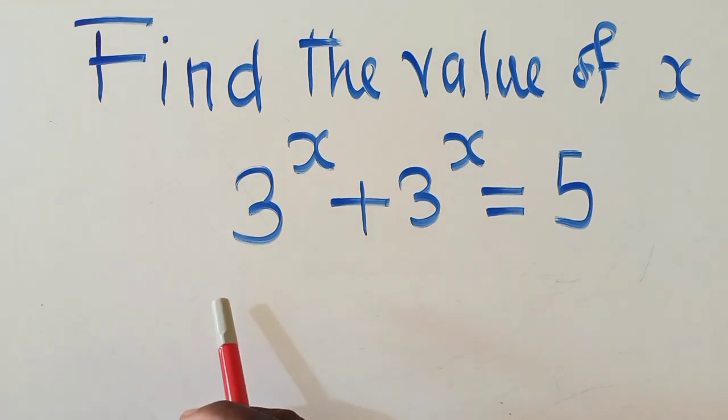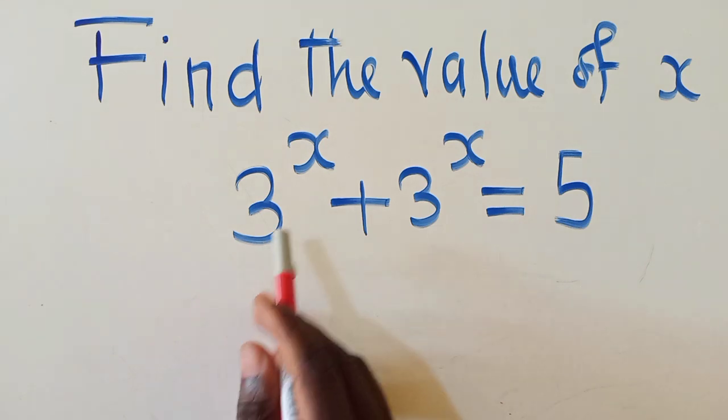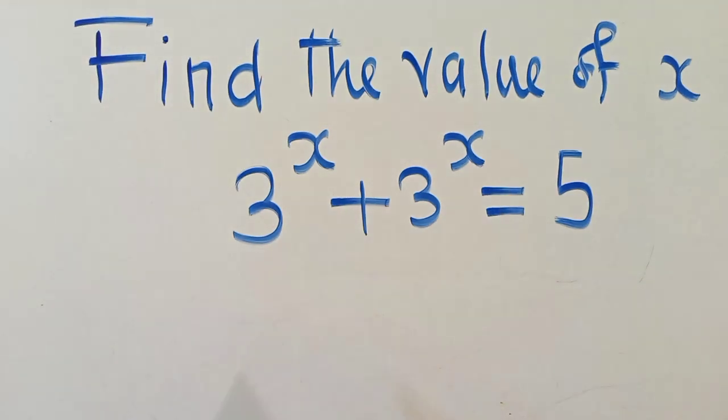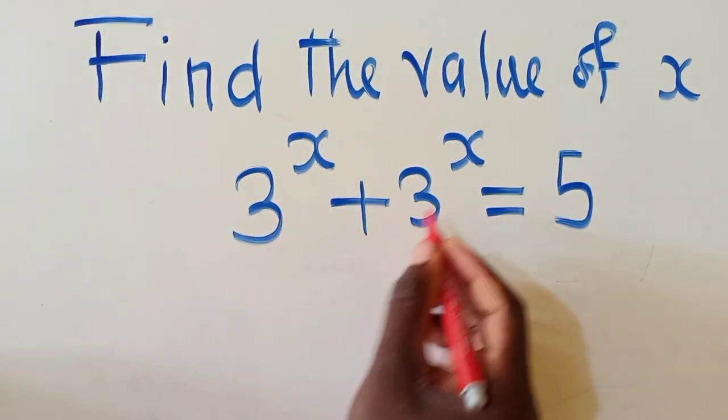so we've got this exponential equation right here. Now, to solve this exponential equation, we just have to add this term and this term. That's the first step we must perform. If you can see, we have 3 power x plus 3 power x. They are common, so they can be added.